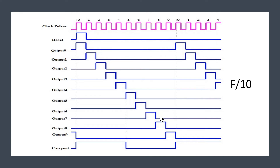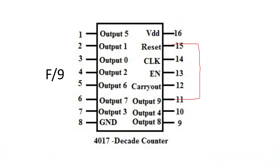Now let us assume that you want to divide a frequency f by 9. In that case, you have to play a trick and connect output signal 9 to the reset signal. When we connect output 9 to the reset signal, output 0 will go high one cycle earlier, meaning this pulse will be shifted one clock cycle to the left. Similarly, all other output signals will be shifted by one clock cycle to the left, and all signals will have the frequency f/9. This will be the final circuit diagram when the decade counter divides the input frequency by 9.